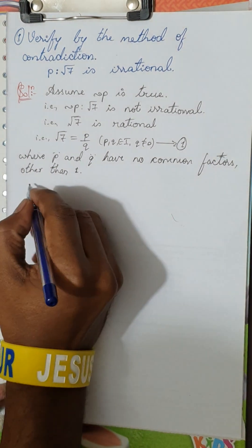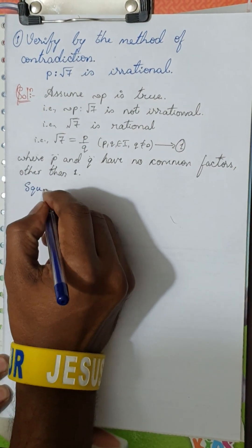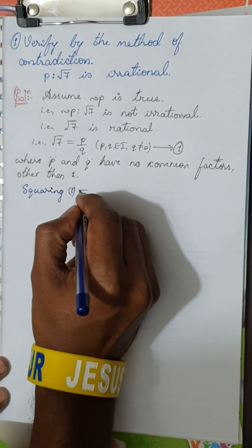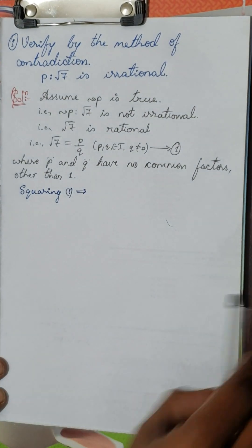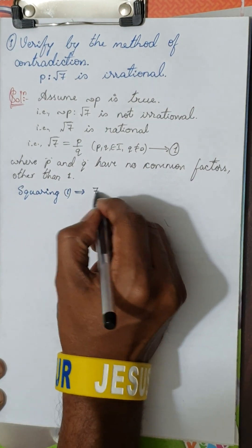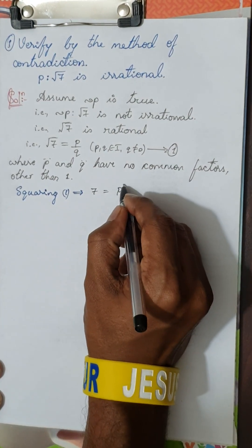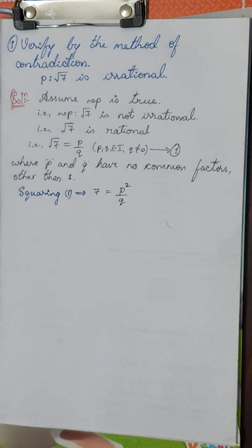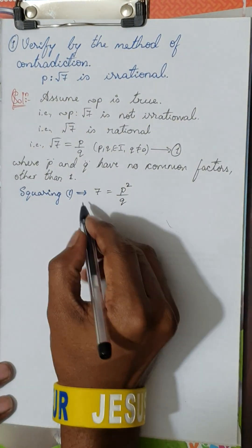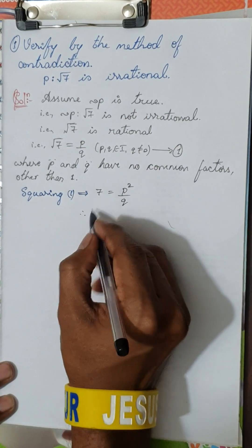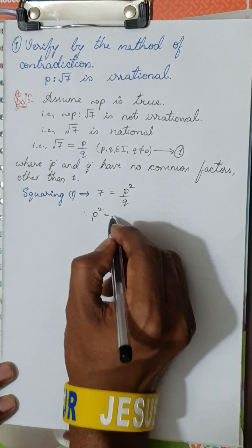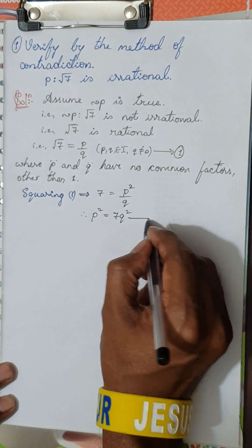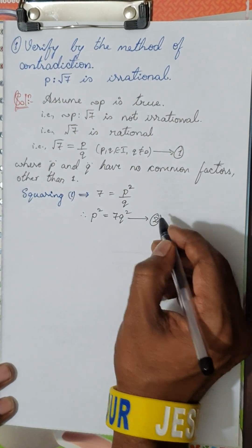Now I will square equation 1. Squaring equation 1, I will get root 7 squared equal to P squared divided by Q squared. Cross multiplying, I will get P squared is nothing but 7 times Q squared. This is equation 2.